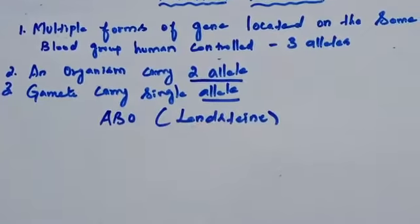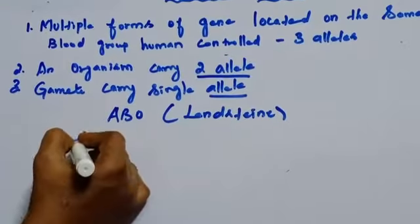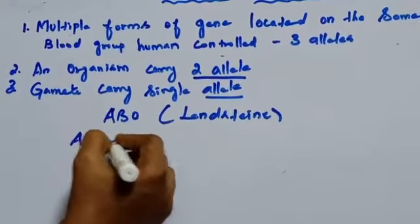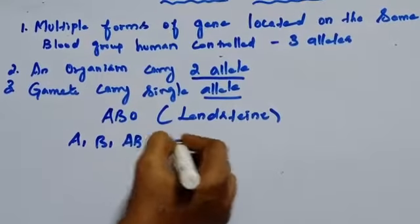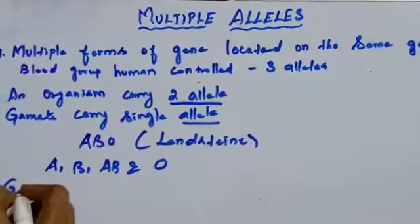Human beings have six genotypes and four blood groups. What are the four blood groups? A, B, AB, and O. Then what are the genotypes? You can see the genotypes, six genotypes I said.